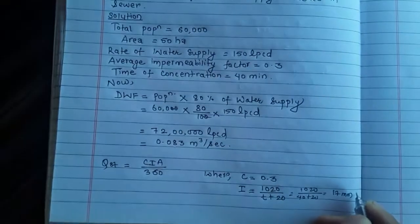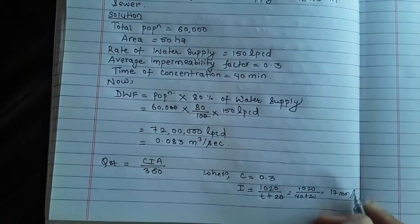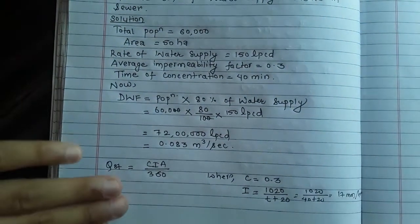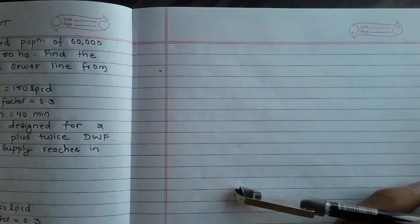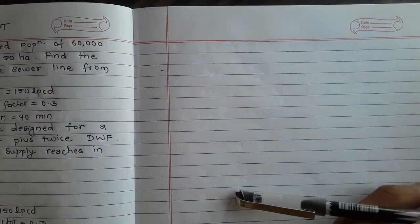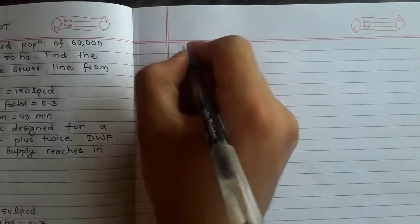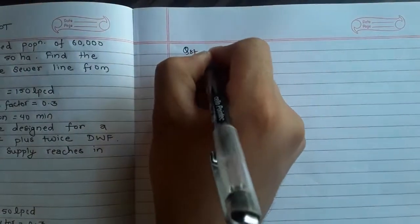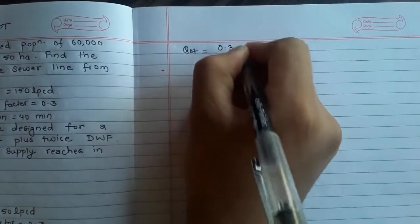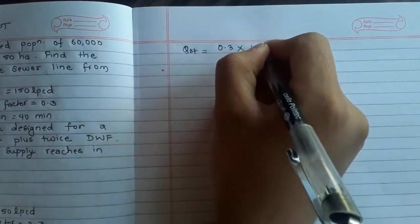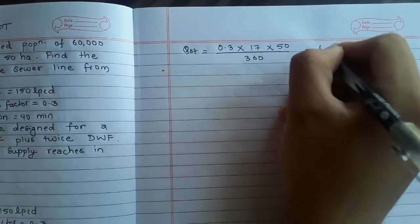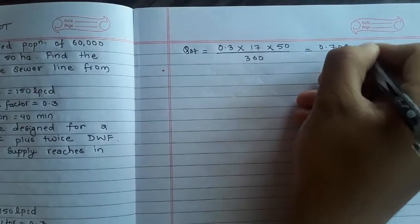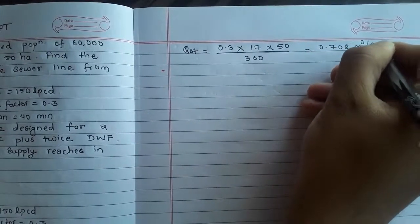The intensity of rainfall i = 1020 divided by (40 + 20) = 17 mm per hour. Now substituting: Q_st = 0.3 into 17 into 50 divided by 360 equals 0.708 metre cube per second.